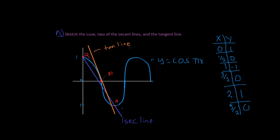Finally, the tangent line is at P — it's touching P and has the same direction as the curve. At that given position, the curve is going up and in this direction. That's why the tangent line doesn't follow the curve: as soon as it touches the curve, it's going in the same direction as the curve at that point. And that's all you really need to know about this graph and how to sketch it.